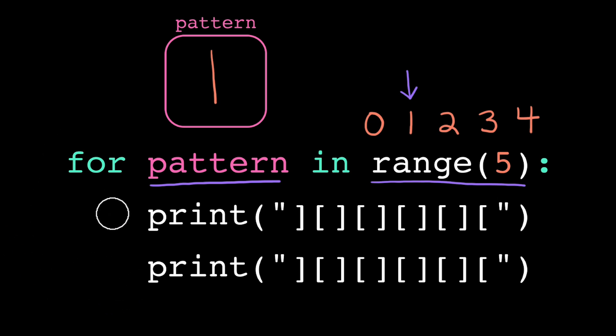It enters the loop body again, executes this print statement, then this print statement, hits the bottom of the loop, and then loops back to the top. It assigns the next value in the range to the loop variable and then it repeats. Pattern now contains 2. We do it again, pattern contains 3. We do it again, pattern contains 4.